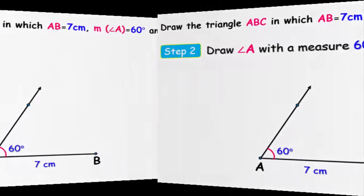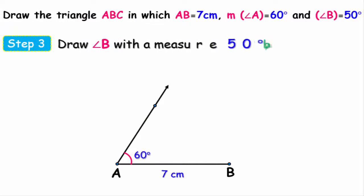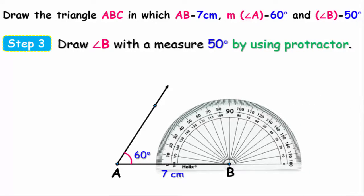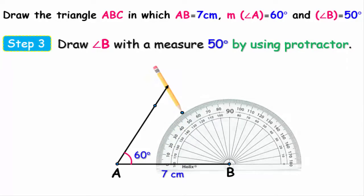The third step: by the same method, we draw an angle B whose measure is 50 degrees. Set the center of the protractor at point B. From the left side of the protractor, start from zero degrees and get to 50 degrees, then put a dot at this measurement.